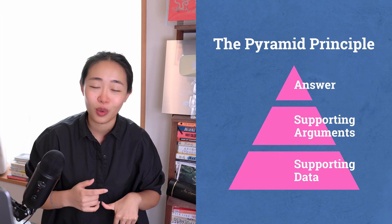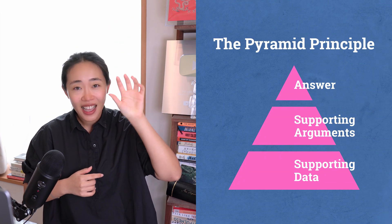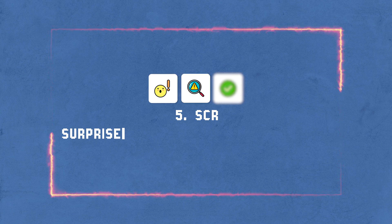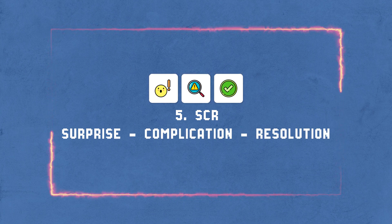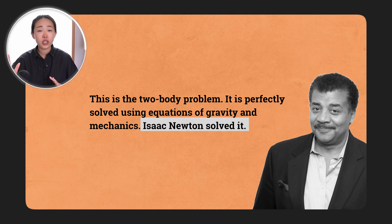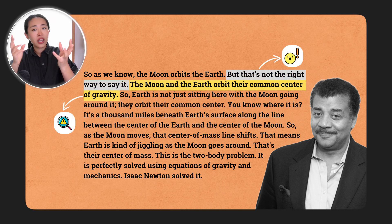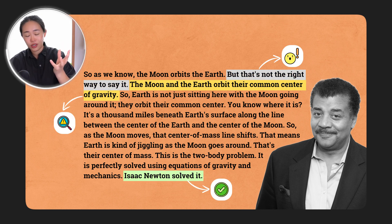For those familiar with frameworks, you'll see that is the setup for the pyramid principle — you have the first answer, some supporting arguments, and then you go into the details. Now let's come back to the third part of the SCR framework. Remember: surprise, complication, and finally resolution. Here we get the resolution — the two body problem is perfectly solvable by Newton's equations. That closes one loop: something surprising, a complication, some new concepts, and now a resolution. But going forward he's going to open up new loops which will continue to keep our attention.